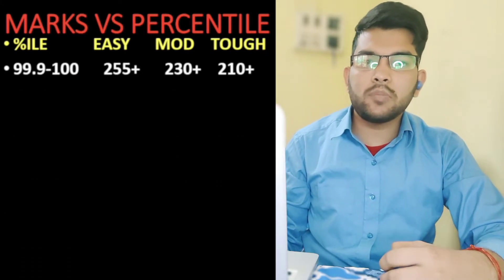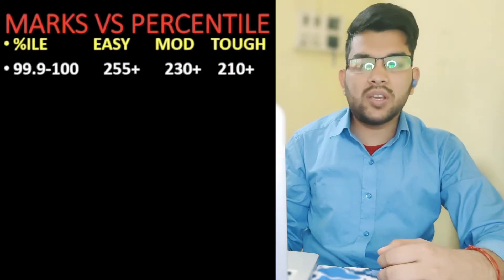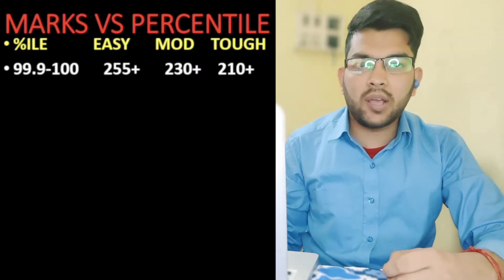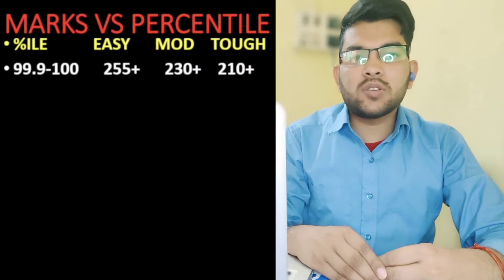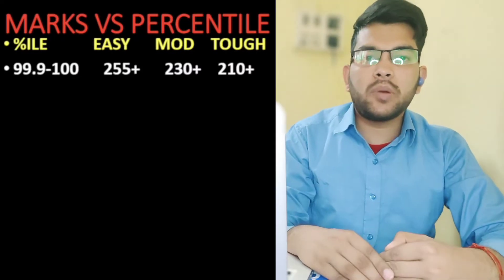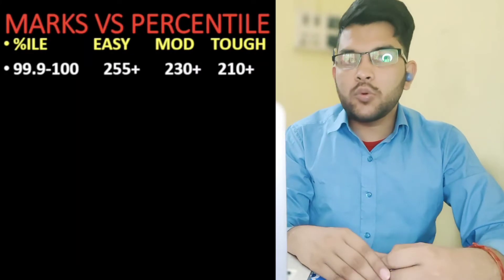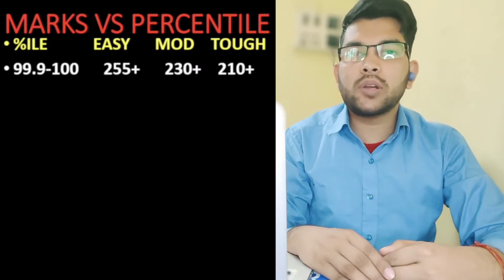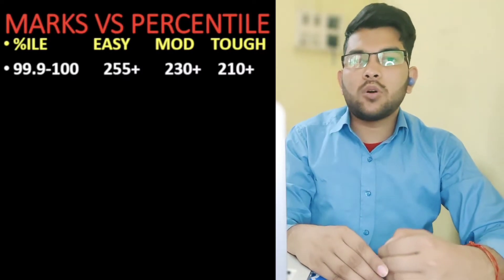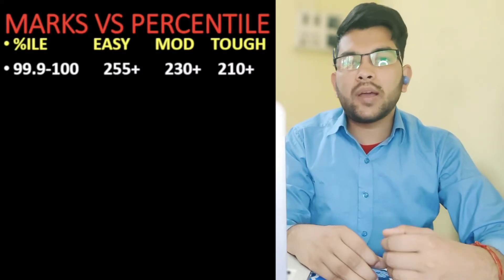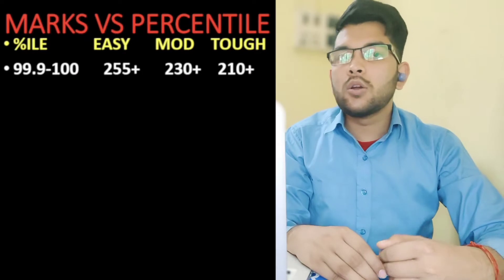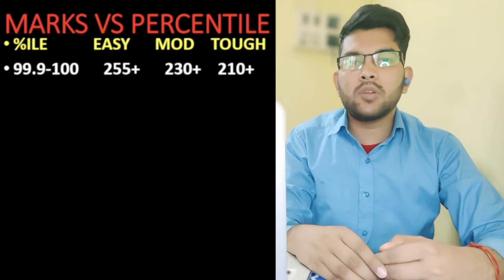For 99.9 to 100 percentile, you need 255+ marks for an easy paper, 230+ for moderate, and 210+ for a tough paper. Due to the situation this year, you will get a better percentile at the same marks compared to last year 2021. Comparing with 2020, there were also only two attempts. This year too there are only two attempts, and board students will find it difficult to prepare for JEE Mains since board exams are around the same time. So less marks can also provide you a better percentile — you don't need to score 200+ or 250+ every time to get the best college.